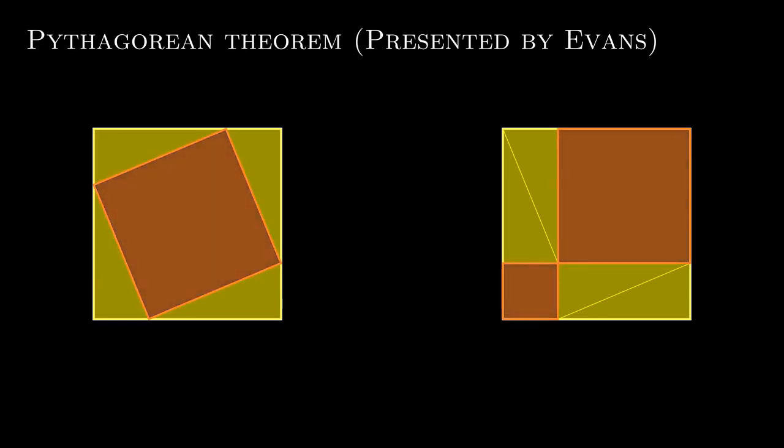Which gives us an equation that c squared should be equal to a squared plus b squared. This forms the equation of the Pythagorean theorem, or the Pythagoras theorem, which we're going to use.